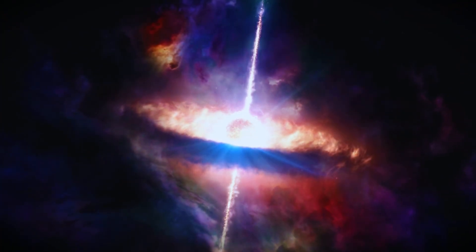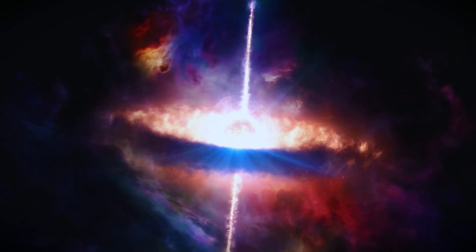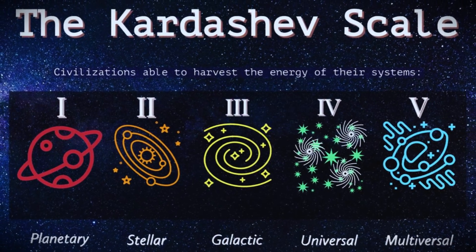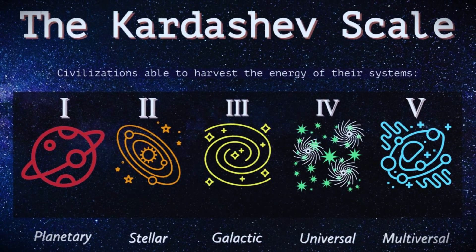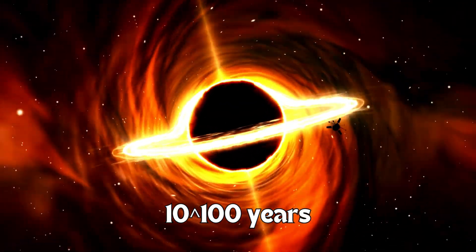The heat death scenario is terrifying, but physicists have proposed astonishing loopholes. Black Hole Civilization, Kardashev Type 4: Advanced beings could harvest energy from rotating black holes for 10 to the 100th power years.